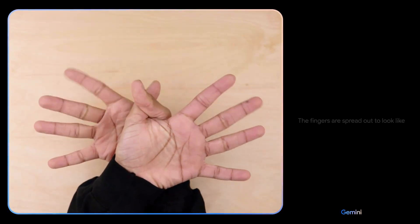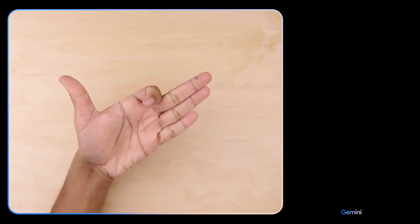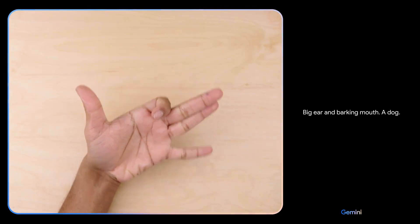What do you see now? The fingers are spread out to look like the wings of a butterfly. What's this? Big ear and barking mouth. A dog. Sweet.